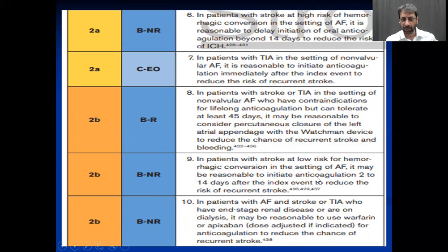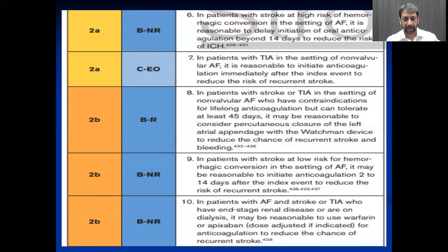In patients with stroke at low risk for hemorrhagic conversion in the setting of AF, it may be reasonable to initiate anticoagulant 2 to 14 days after the event — if you don't have much risk for hemorrhagic conversion, you can start anticoagulant even on the second day. In patients with AF and stroke or TIA who have end-stage renal disease or are on dialysis, it may be reasonable to use warfarin or apixaban. I hope this will help you in managing your patient with stroke and deciding about antithrombotic treatment. Thank you for listening.